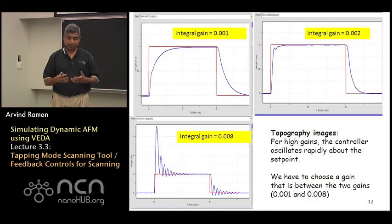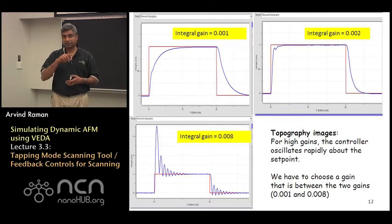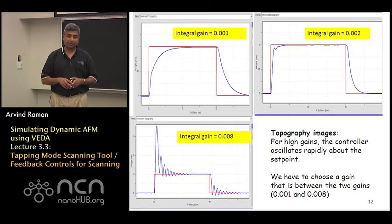And when you do it for different integral gains these are the kind of results that you can display. On the top left you see a result at the lowest integral gain .002.